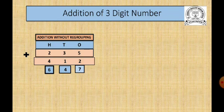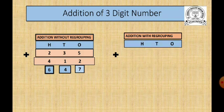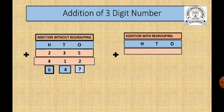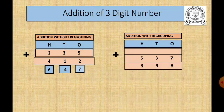Now we will go to the next type of addition, that is addition with regrouping. Regrouping means we will get a carry here. We will place the numbers: hundreds, tens, and ones, then a carry place. We bring the first number, that is 537, and then put 398 below it.